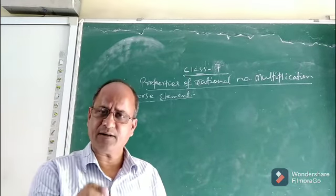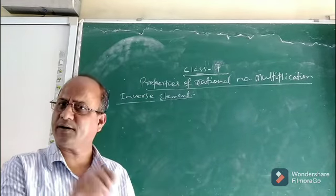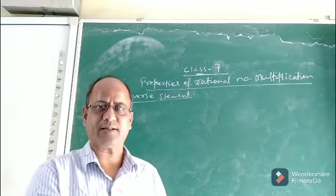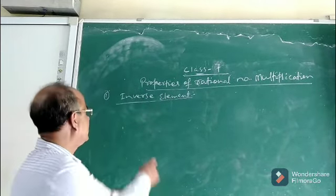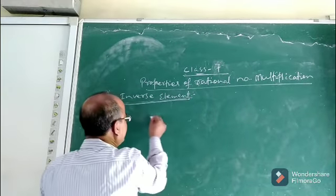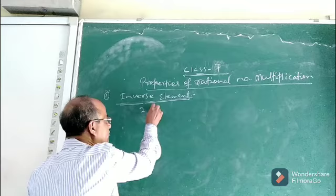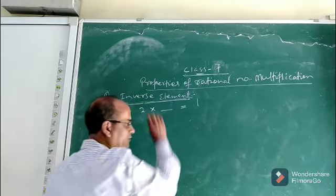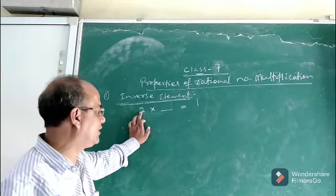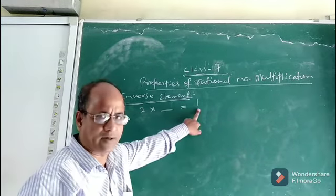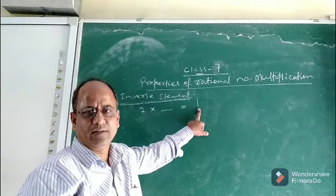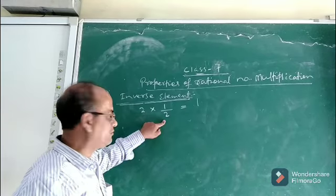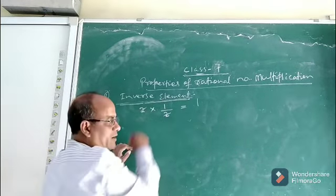If there exists a multiplicative identity or identity element for multiplication, there must be some inverse element. What is multiplicative inverse or inverse element of multiplication? Let us discuss — existence of inverse element. Suppose 2 is a rational number. If I ask you: 2 into dash equals 1, what will be the answer? Which number multiplied by 2 will give you 1? The answer is 1/2. If we multiply 1/2 by 2, then 2 and 2 will cancel and the product will be 1.